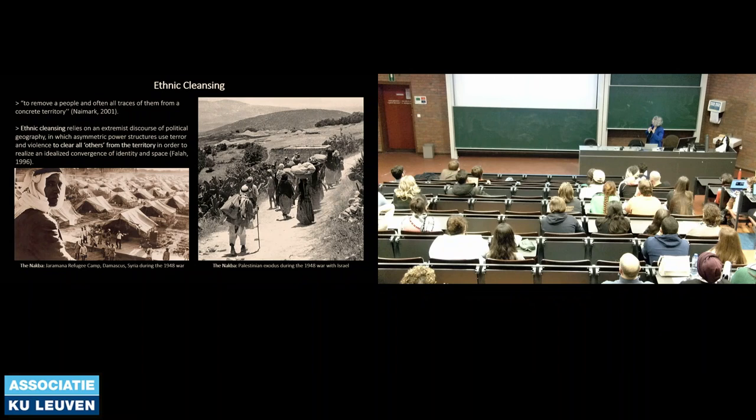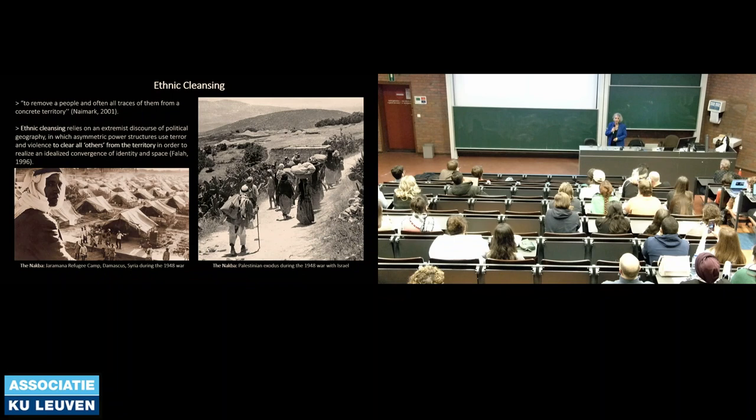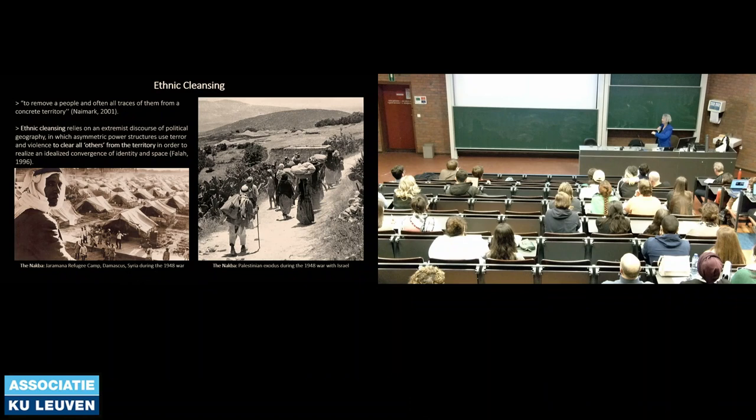Other political violence taking place during the destruction of cities and villages is ethnic cleansing or genocide — the intent to erase and exterminate a certain targeted group because of their ethnic background and their claim to land or property. Many forms of political violence happen simultaneously, so urbicide will happen in combination with ethnic cleansing or genocide.